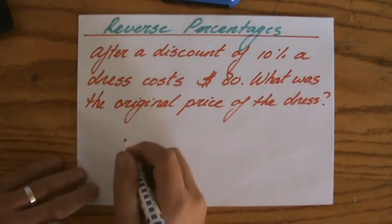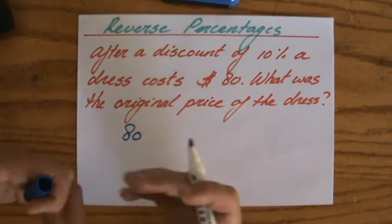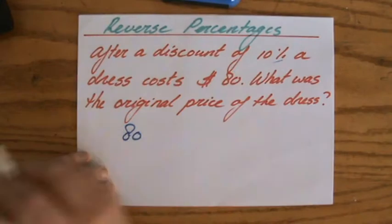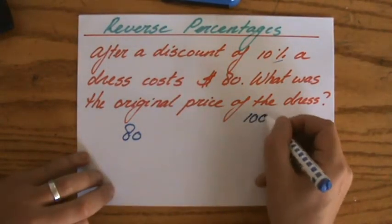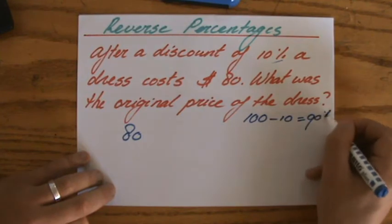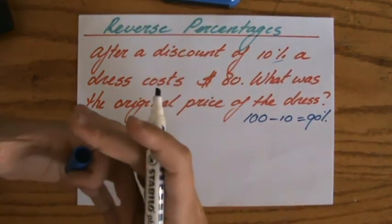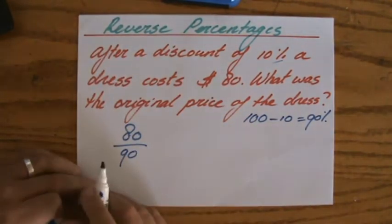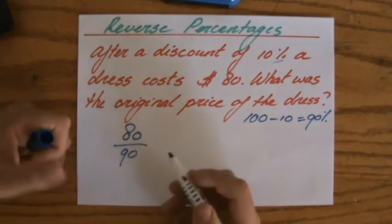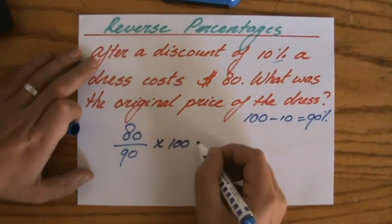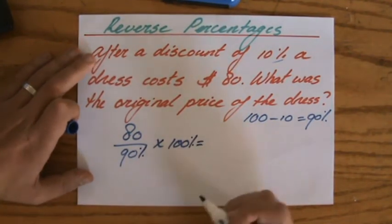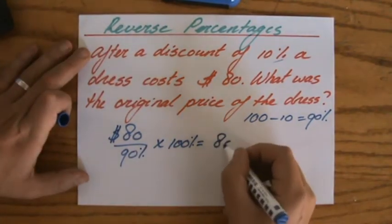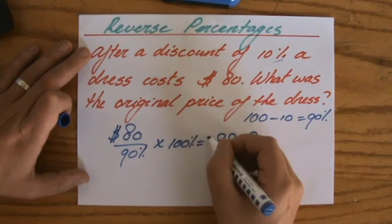The important thing to realize is that the $80 is some percent of the original price. They took off 10%, so the $80 is 100 minus 10, which is 90% of the original price. So to get the original price, I'm going to divide 80 by 90,